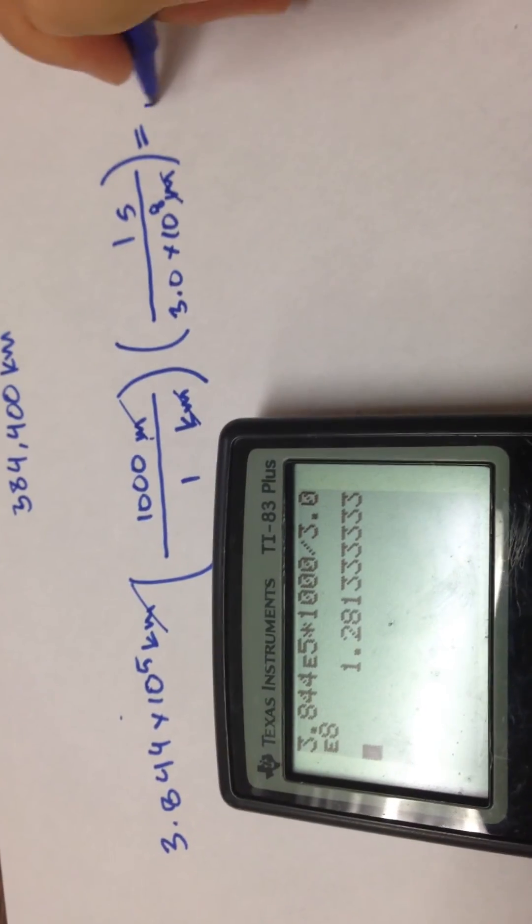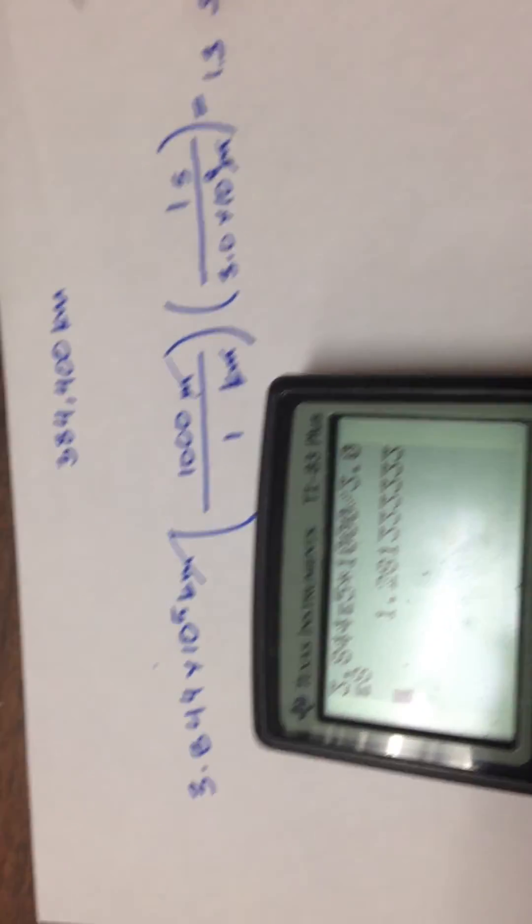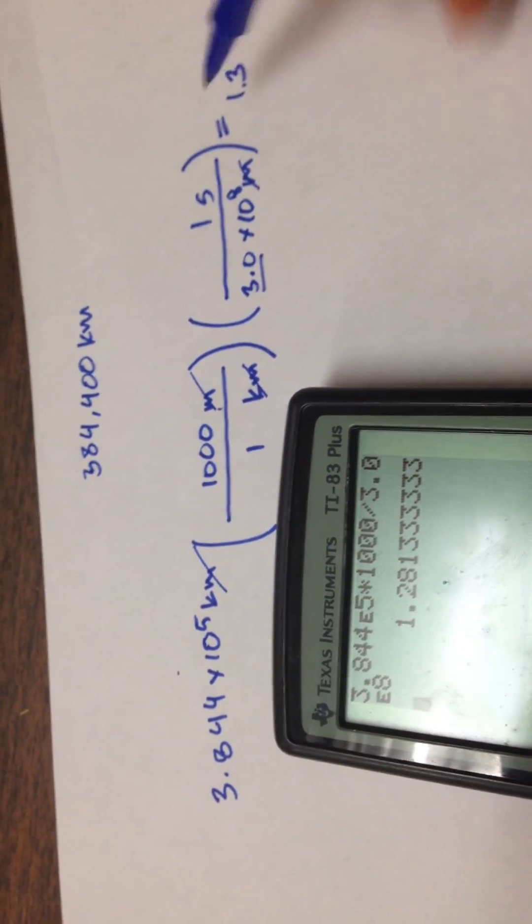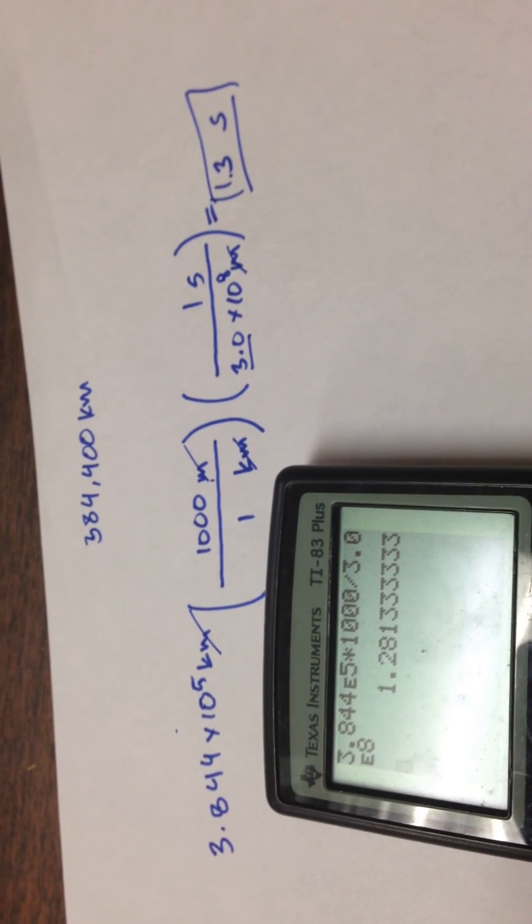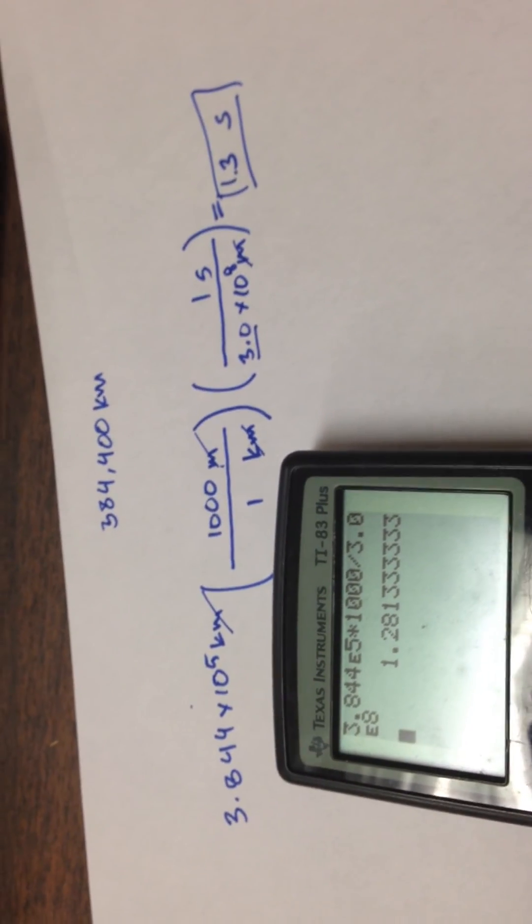And it's going to take exactly one point... I can round to two sig figs because this value is in two sig figs. So it's going to take 1.3 seconds for me to relay information from the moon back to earth at the speed of light.